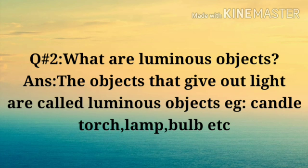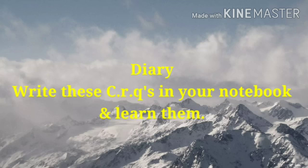The objects that give out light are called luminous objects. For example, candle, torch, lamp, bulb, etc. Objects that give light — for example, candle and torch — are called luminous objects. This is your today's task.